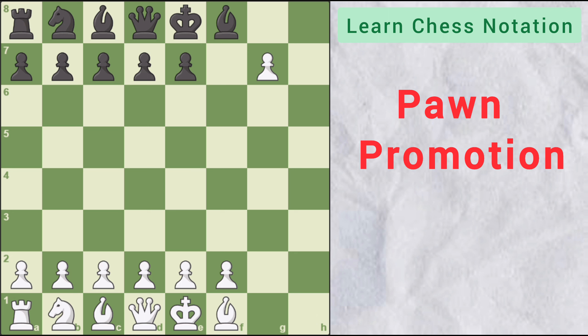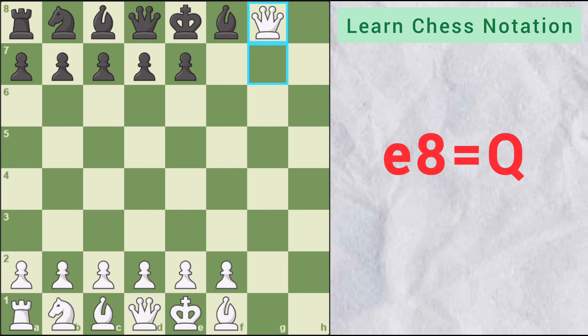The next is pawn promotion for which equal to and after that the notation of piece to which it is promoted to is used. For example, if this pawn is promoted to queen, then it will be written as E8 equal to capital Q.